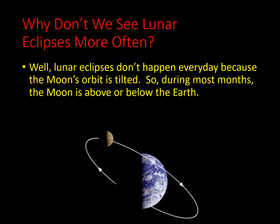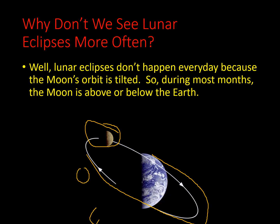Why don't we see lunar eclipses more often? Lunar eclipses don't happen every month because the moon's orbit is tilted. During most months, the moon is above or below the earth's shadow. The moon's orbit is elliptical, meaning it revolves around the earth at varying positions — sometimes in the middle and sometimes to the side.